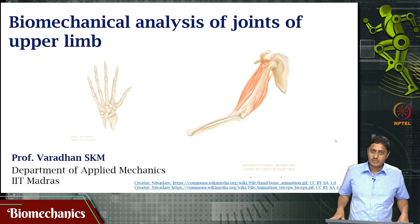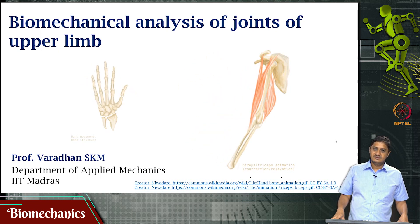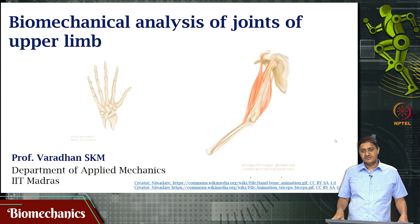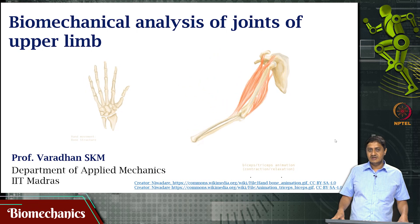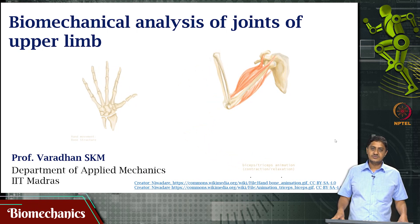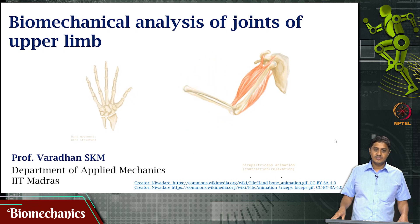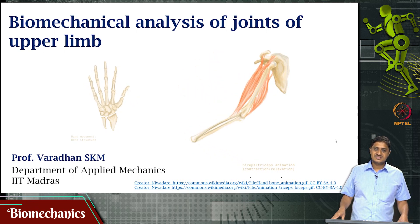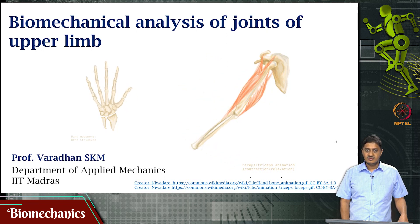Welcome to this video on biomechanics. We have been looking at the biomechanics of the joints of the upper limb — specifically the shoulder joint and elbow joint — so in this video we will be looking at the wrist joint and the joints within the fingers. The human hand has a very large number of bones and bony articulations, which give rise to the enormous dexterity found in humans. Let us get started with our analysis of the bones of the hand.